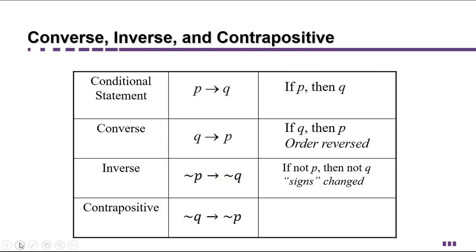And then finally, if you change both the signs and the order from the original conditional statement, then you get if not Q then not P. And this is called the contrapositive. When the order is reversed only, it's the converse. When the signs change only, it's the inverse. And when both change, that's the contrapositive.